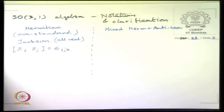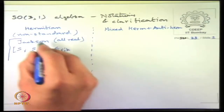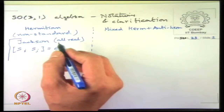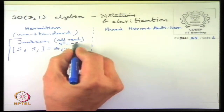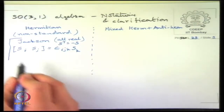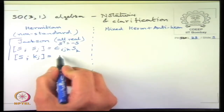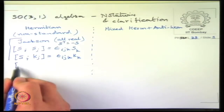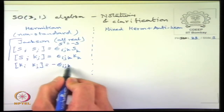Jackson has this convention which is all real and therefore actually not Hermitian. The rotation matrices are anti-symmetric, so he uses S transpose equal to minus S. His commutation relation is [S_i, S_j] = epsilon_{ijk} S_k, and [K_i, K_j] = minus epsilon_{ijk} S_k.